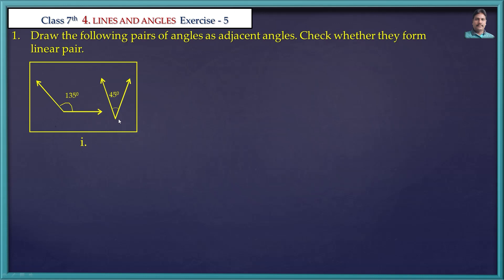Children, what is a linear pair? A linear pair is a pair of adjacent angles whose sum is 180 degrees. Linear pair means the sum of adjacent angles is 180 degrees and the two adjacent angles form a linear pair.